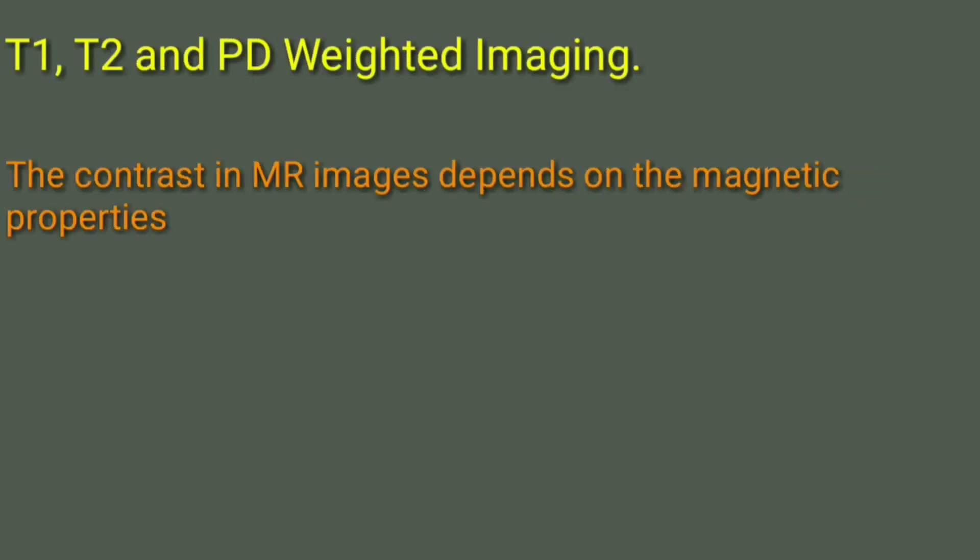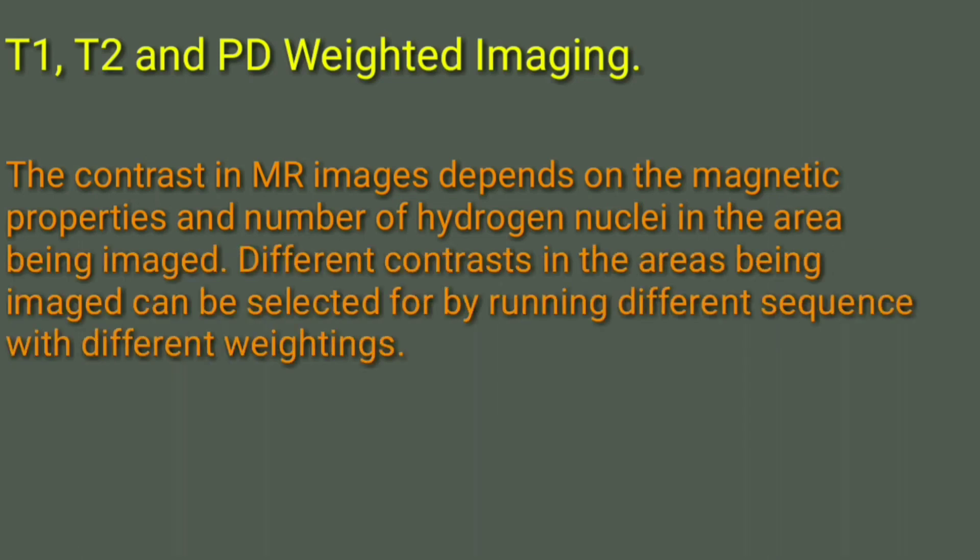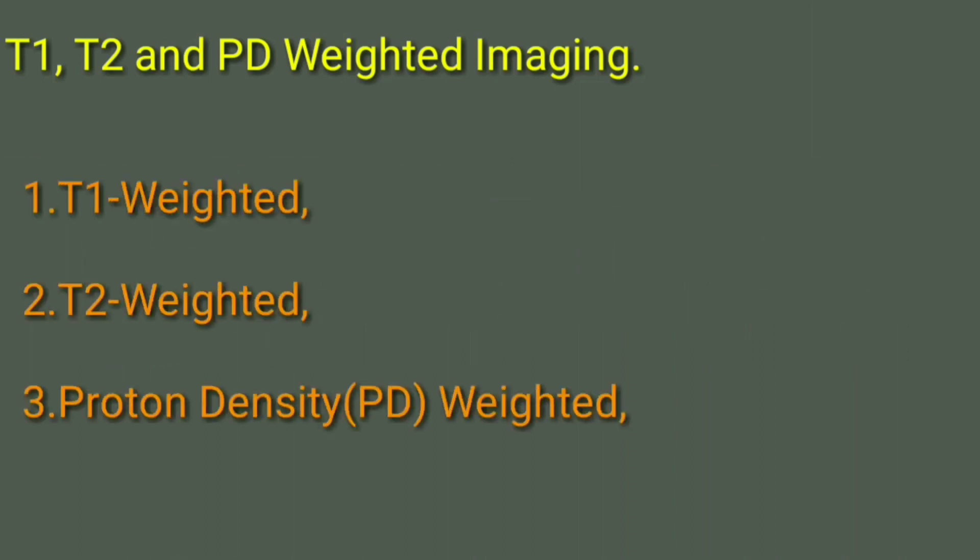T1, T2, and PD weighted imaging. The contrast in the MR depends on the magnetic properties and the number of hydrogen nuclei in the area being imaged. Different contrast in the area can be imaged by selecting or running different sequences with different weights. Now let's see the three of them: T1 weighted, T2 weighted, and proton density weighted.